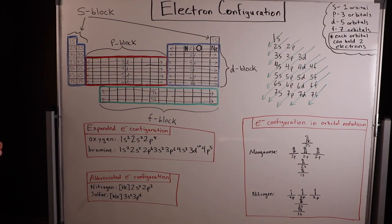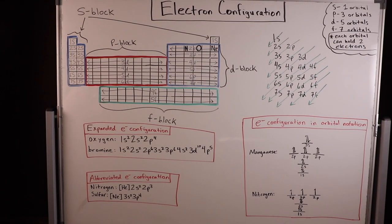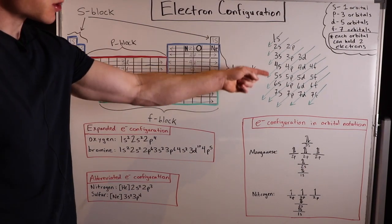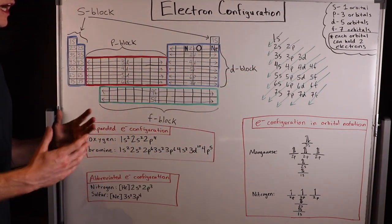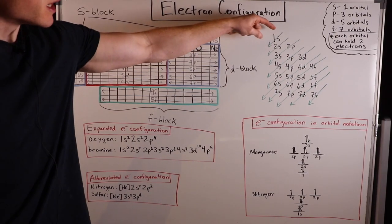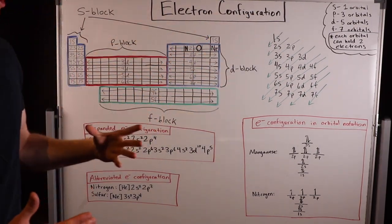Electron configurations describe how electrons are distributed around an atom. Electrons are contained in orbitals. In this green arrow diagram, I've described the order in which electrons fill orbitals.